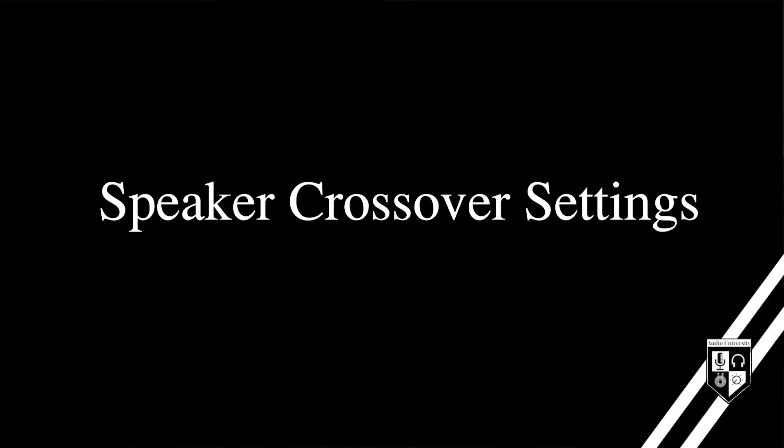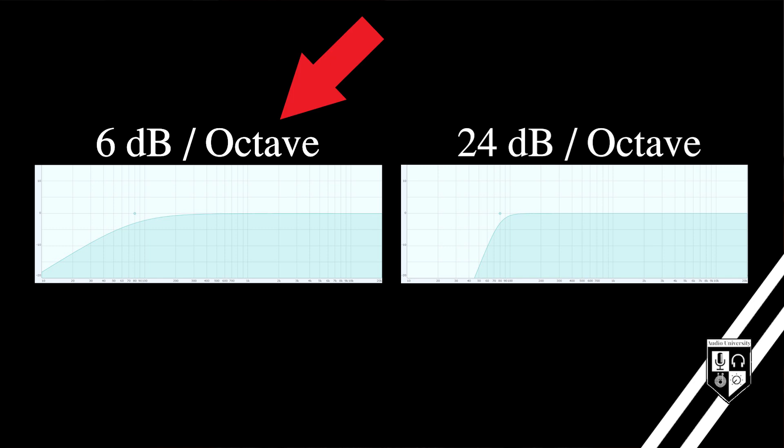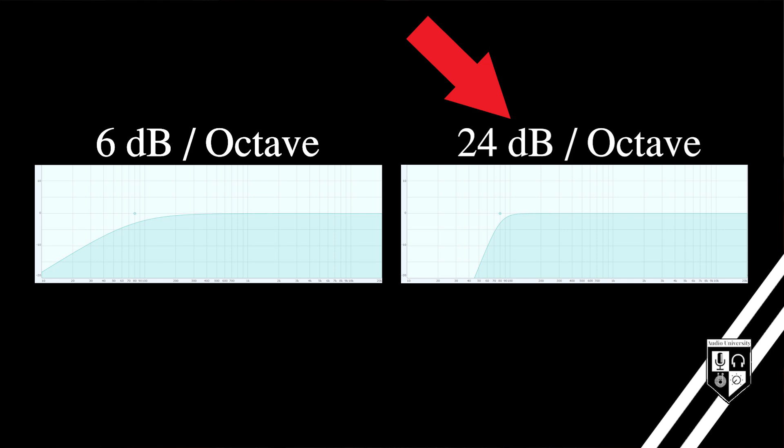Low-pass and high-pass filters have two basic settings: cutoff frequency and slope. The cutoff frequency determines where the filter begins — typically the point where the filter reaches 3 dB of attenuation. The slope describes the rate of attenuation over frequency; filters can be steep or gradual. For example, a gradual slope is 6 dB per octave, while a steep slope is 24 dB per octave. The most common slopes used in crossover settings range from 12 to 18 to 24 dB per octave.